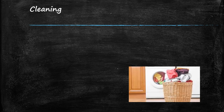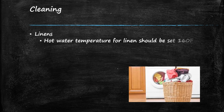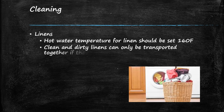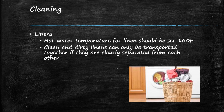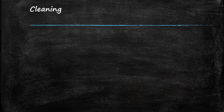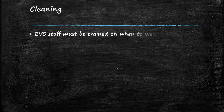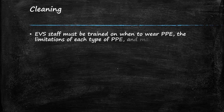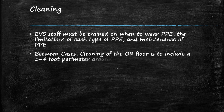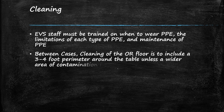Cleaning linens: hot water temperature for linen should be set at 160 degrees Fahrenheit. Clean and dirty linens can only be transported together if there is clear separation from each other. EBS staff must be trained on when to wear PPE, the limitations of each type of PPE, and maintenance of PPE. Between cases, cleaning of the OR floor is to include a three to four foot perimeter around the table unless a wider area of contamination is noted.